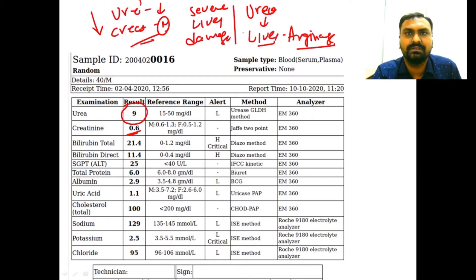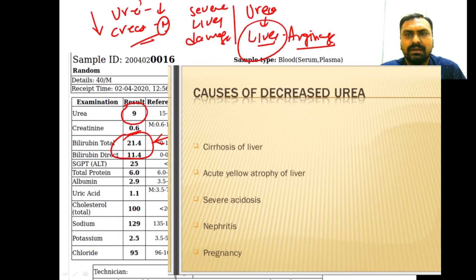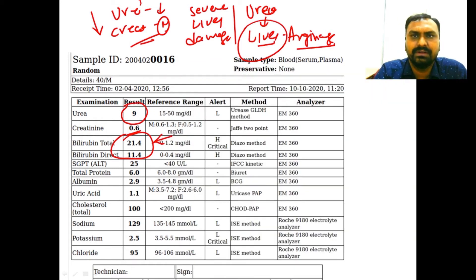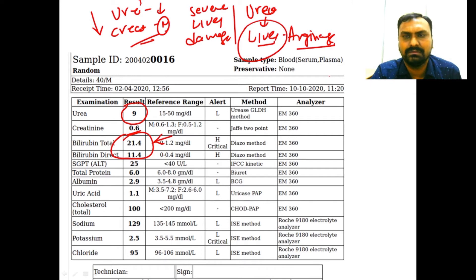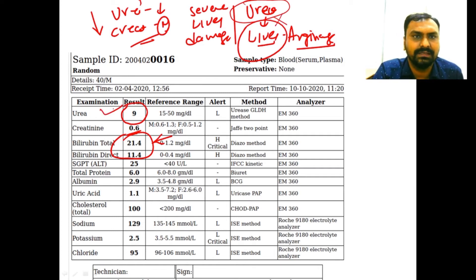Whenever there is severe liver damage — you can see the bilirubin (VN) is increased — it may be due to severe liver injury. Severe liver injury leads to hepatocyte cellular damage, and the cells that produce urea can no longer form it, so urea level will be decreased.